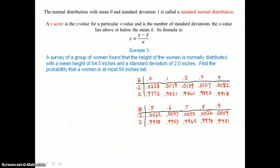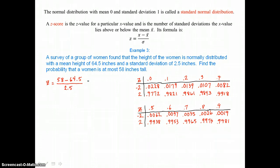So to determine that, we're going to find our z-score using our formula. So that z-score is going to equal our x-value, which is 58, minus the mean that's given of 64.5, divided by the standard deviation, which is also given as 2.5. So if we run that through our calculator, we're going to get a z-score of negative 2.6.